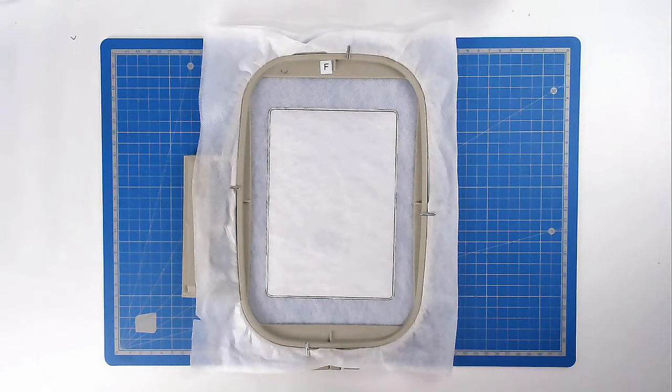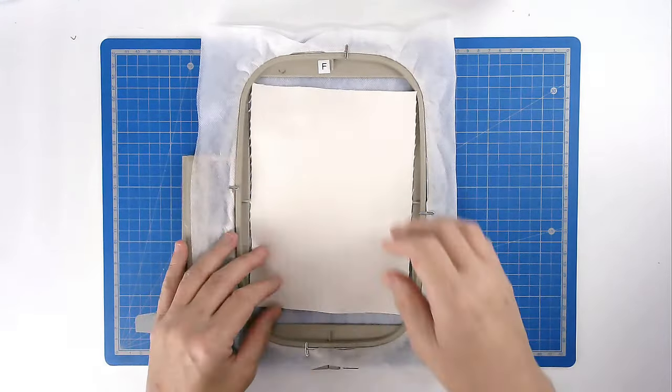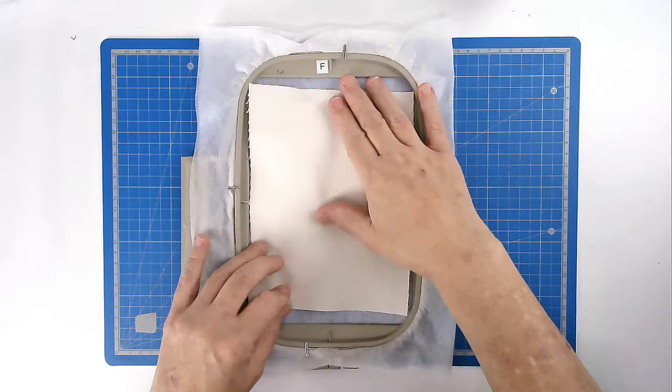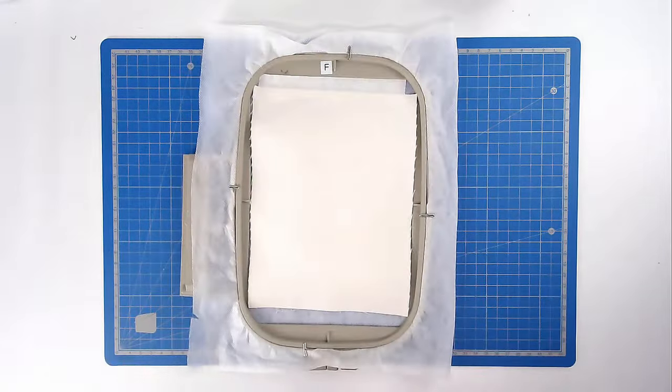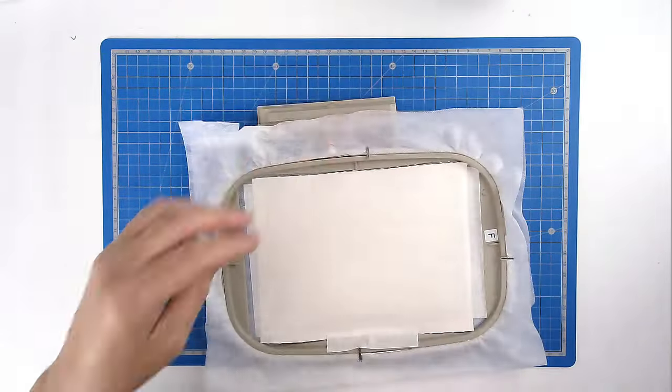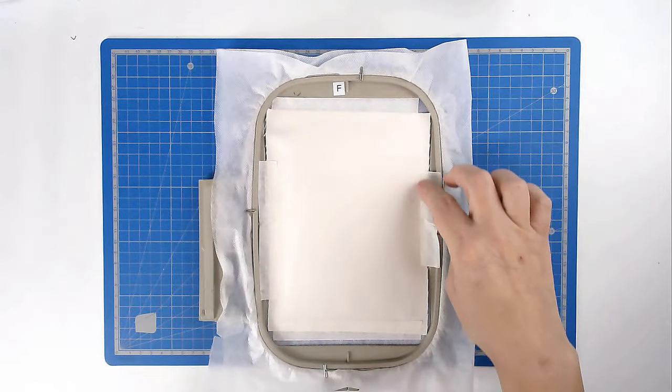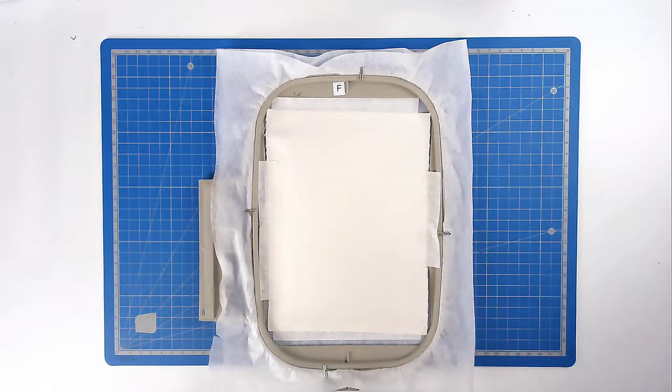Place your front fabric over the top of the batting and tape it in place. I've added some tape on the sides as well just to keep my fabric nice and taut while the stitching goes on.